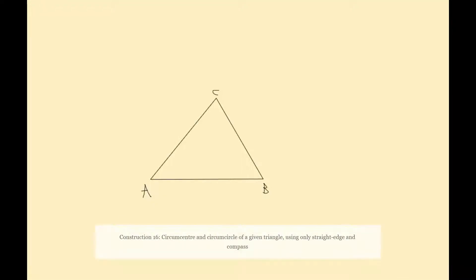In this video we're looking at construction 16 which is asking us to construct the circumcenter and the circumcircle of a given triangle using only a compass and a straight edge. If you need help with how to construct a perpendicular of a line segment, have a look at construction 2 before maybe looking at this construction.